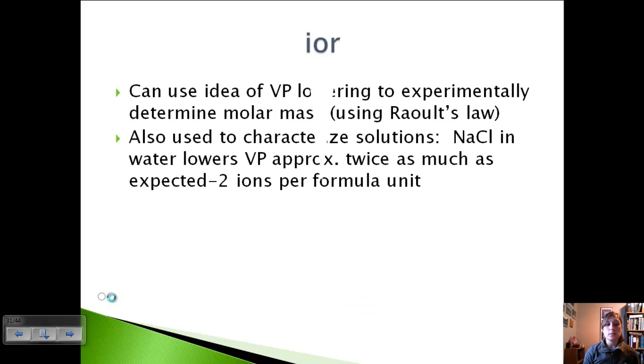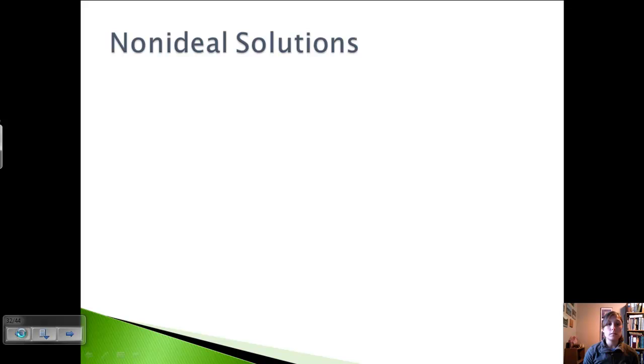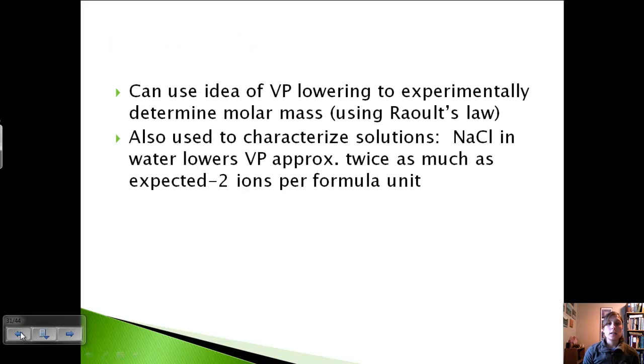Okay, and we can also use this information to characterize solutions. So we'll talk about this in a little bit more detail later, but if you look at like a saltwater solution, it lowers the vapor pressure approximately twice as much as it would be expected, and this is due to the fact that because salt is ionic, when it dissolves in water, dissociates into two ions per formula. And we'll talk about that in more detail later.